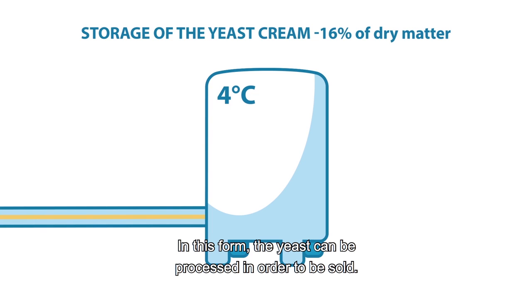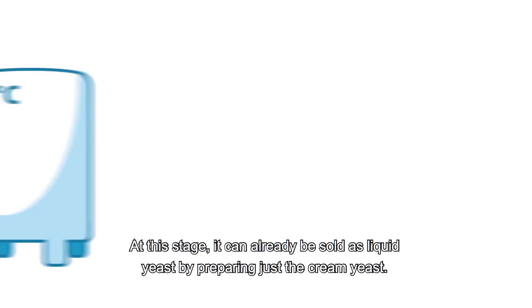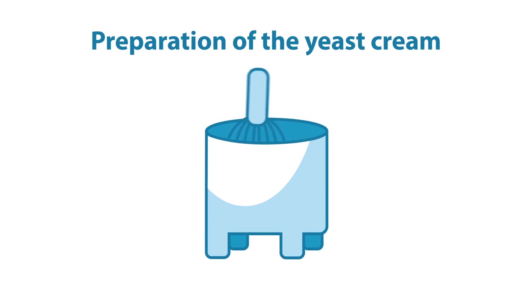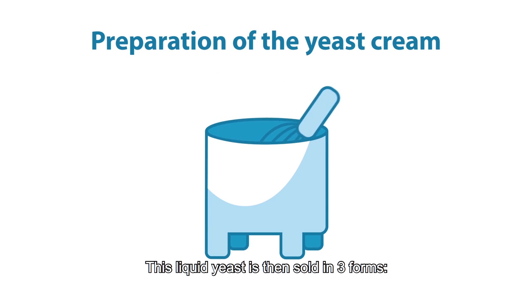In this form, the yeast can be processed in order to be sold. At this stage, it can already be sold as liquid yeast by preparing just the cream yeast. This liquid yeast is then sold in three forms,